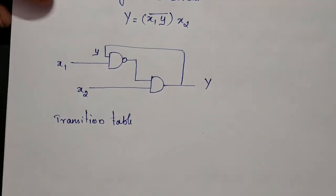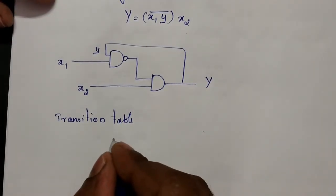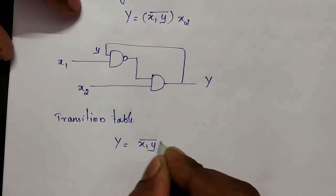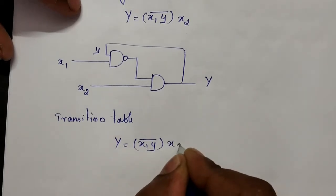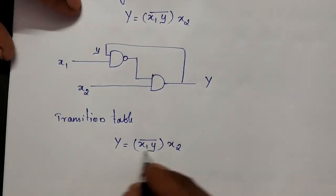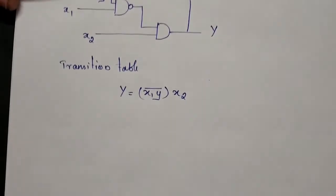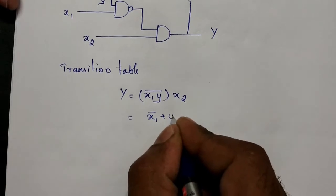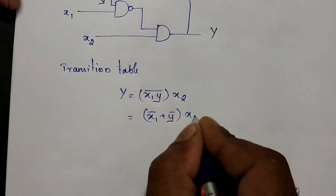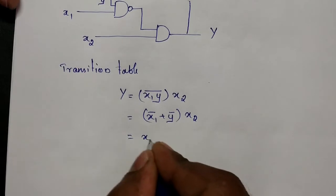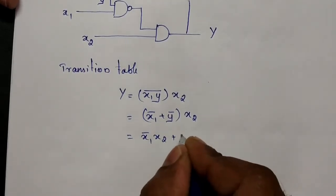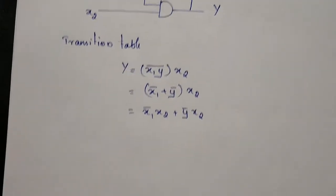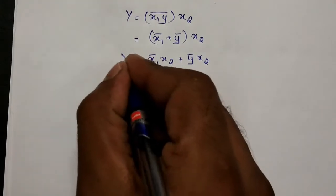For the transition table, the expression should be in sum of product (SOP) form. So capital Y equals x1·y bar whole quantity into x2. Applying De Morgan's law gives x1 bar plus y bar, then multiplied by x2, which expands to x1 bar·x2 plus y bar·x2. Now the expression is in SOP form.